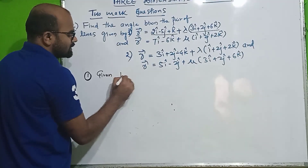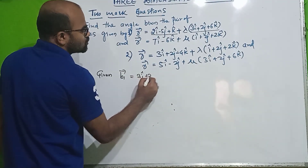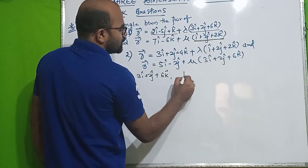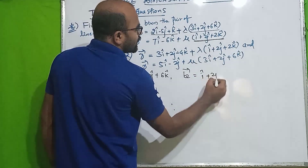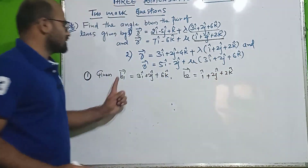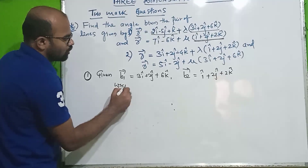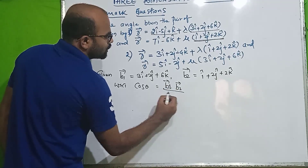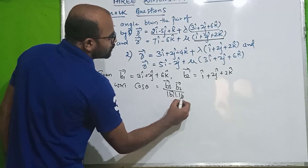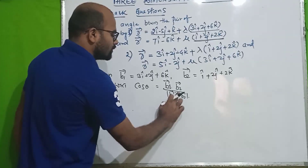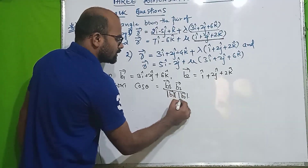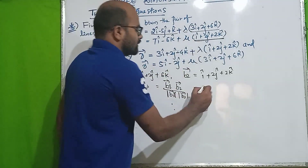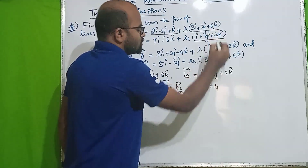b1 bar is given as 3i + 2j + 6k, and b2 is given. Computing cos θ = b1 · b2: 3 into 1 = 3, 2 into 2 = 4, 6 into 2 = 12.